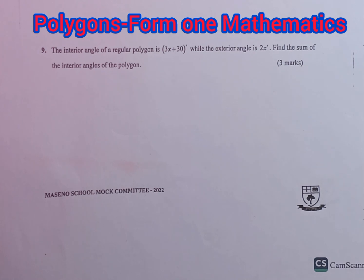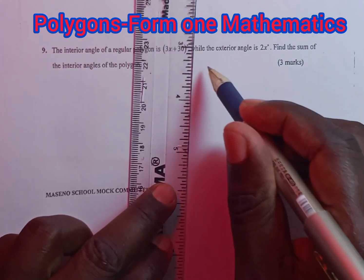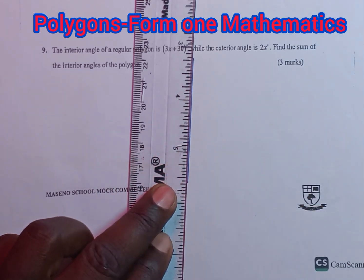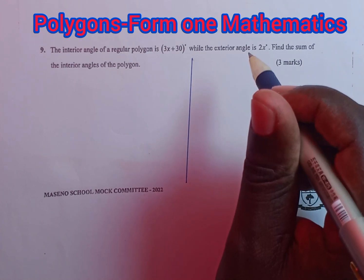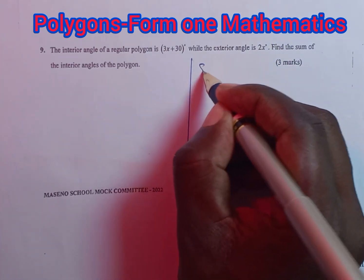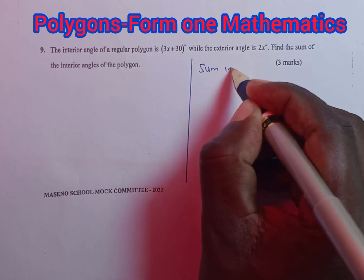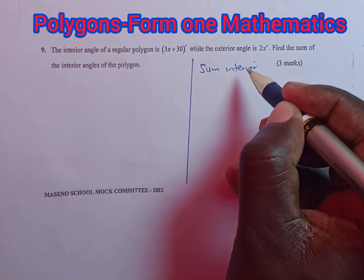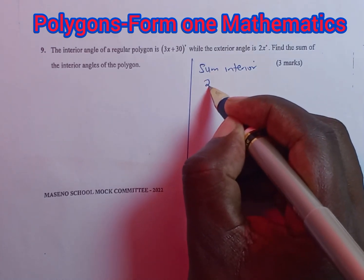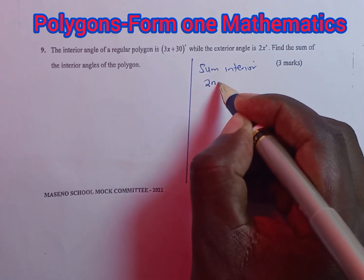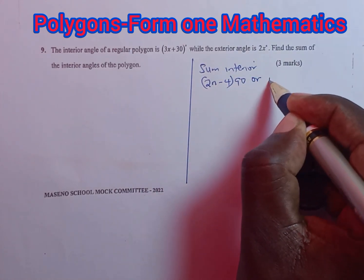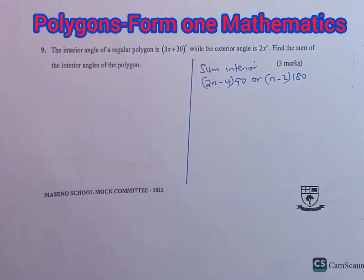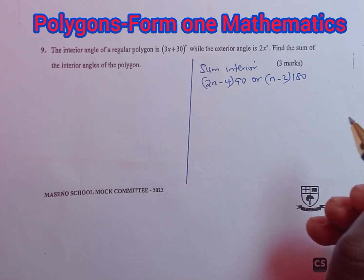Before we go far, let us remind ourselves of the basic formulas that we normally use when working on polygons. The first one is getting the sum of interior angles. For this, we can either use 2n minus 4 multiplied by 90, or we use n minus 2 into 180. That will give us the sum of interior angles.